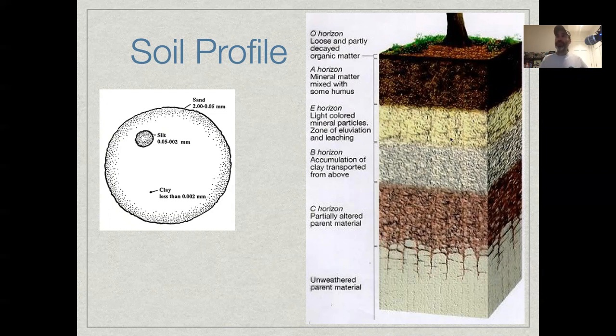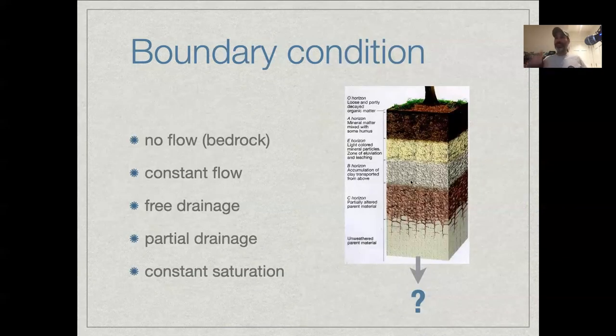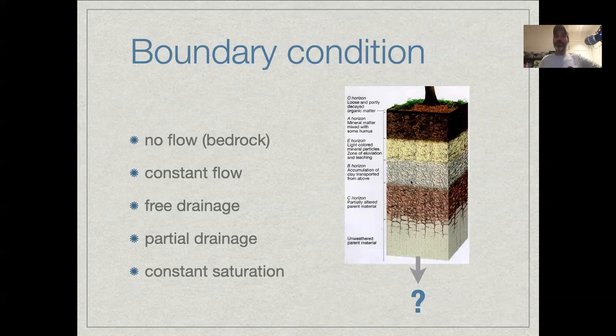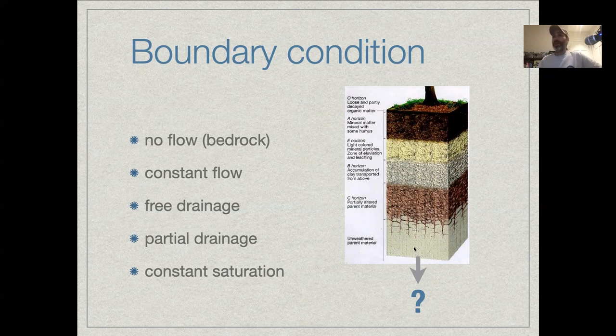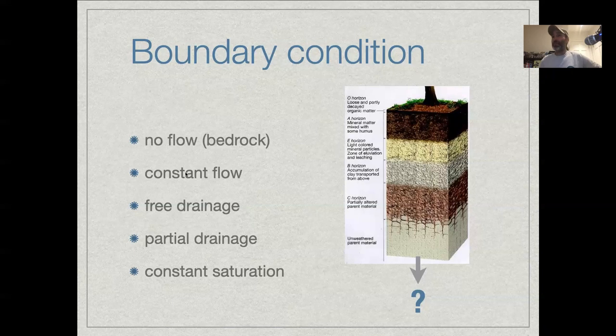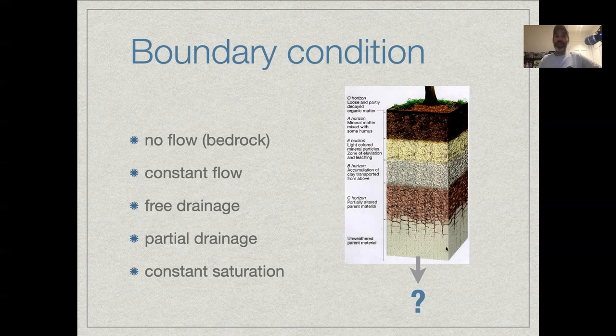When we think about this profile of soil, there's also things we need to think about in terms of the boundary condition. In most of these grid cells, you have soil above you and soil below you, but what do you do at the bottom? There you have choices to make, and the choices you make could depend on the system you're working in. In some systems, you might have bedrock on the bottom, so there's no flow, the water hits there and it stops. Other systems might have drainage through that bedrock into lower soil layers or the watershed. So there may be an assumption of constant flow or free drainage, so just whatever gravity says can happen. Or partial drainage, which would be something between no flow and free drainage. Or you could assume that the water at the bottom is always saturated. So you have choices to make depending on the system you're working in.